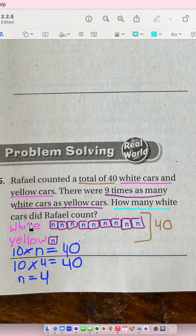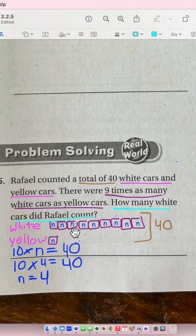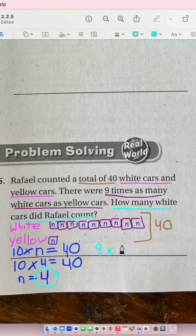How many white cars did Rafael count? How many n's are for the white cars? 1, 2, 3, 4, 5, 6, 7, 8, 9. 9 times 4, because each n is 4, so 9 times 4 is 36. Rafael counted 36 white cars.